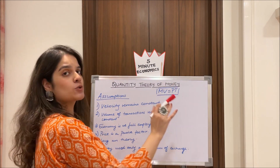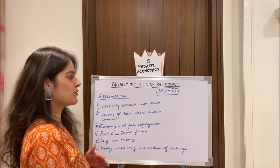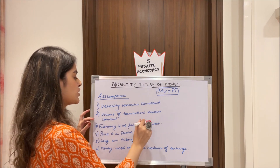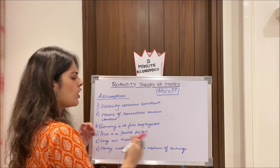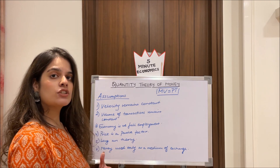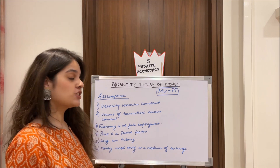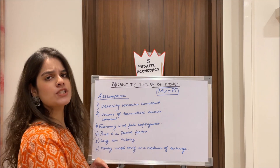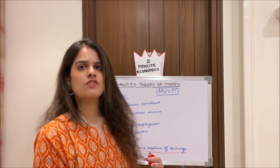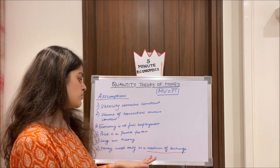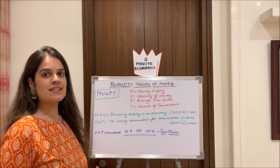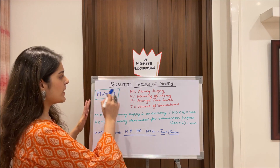The equation is MV = PT, which we will study in detail. First, the assumptions: velocity (V) remains constant; volume of transactions (T) remains constant; the economy is at full employment; price is a passive factor — it cannot change automatically, only due to changes in other factors like money supply; this is a long-run theory; and most importantly, money is used only as a medium of exchange — other functions like store of value and speculative demand are overlooked.